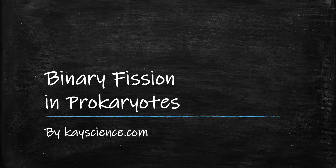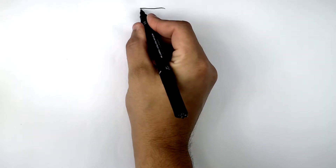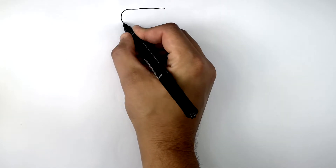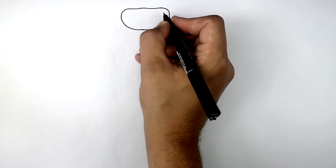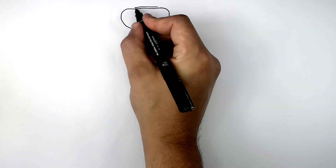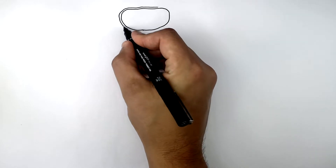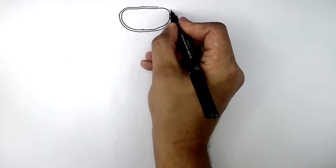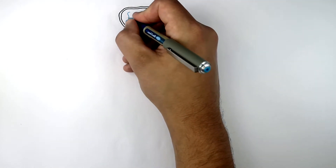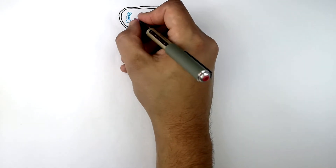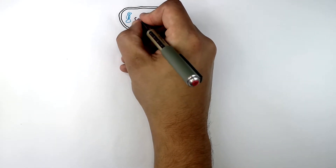Binary Fission and Prokaryotes by kscience.com. This here is a prokaryotic cell — what I'm drawing here is a bacterial cell. Because it's a prokaryotic cell, it's got a cell wall, which I'm drawing now. And it's got chromosomal DNA, or circular DNA. And this here is the plasmid DNA.